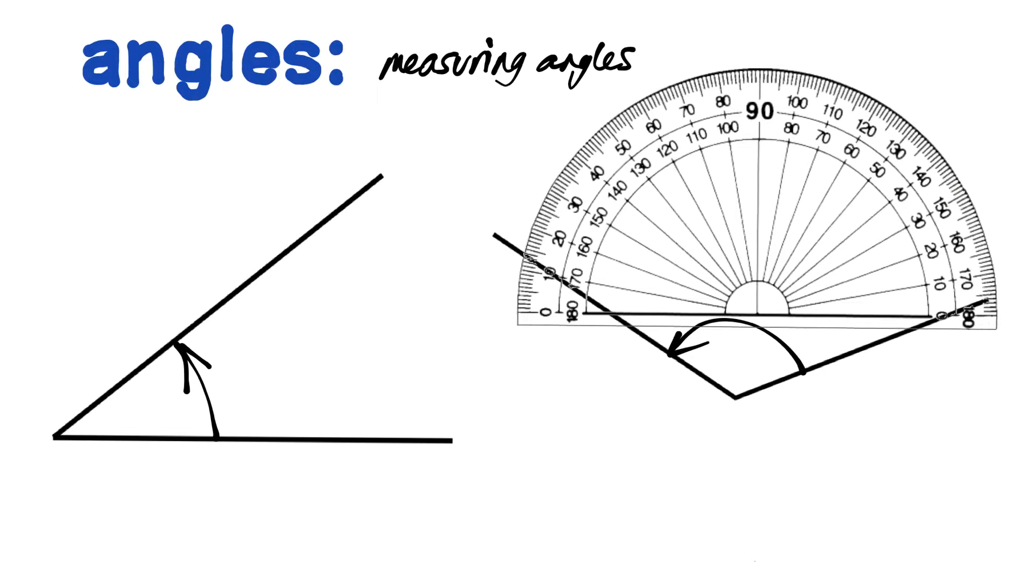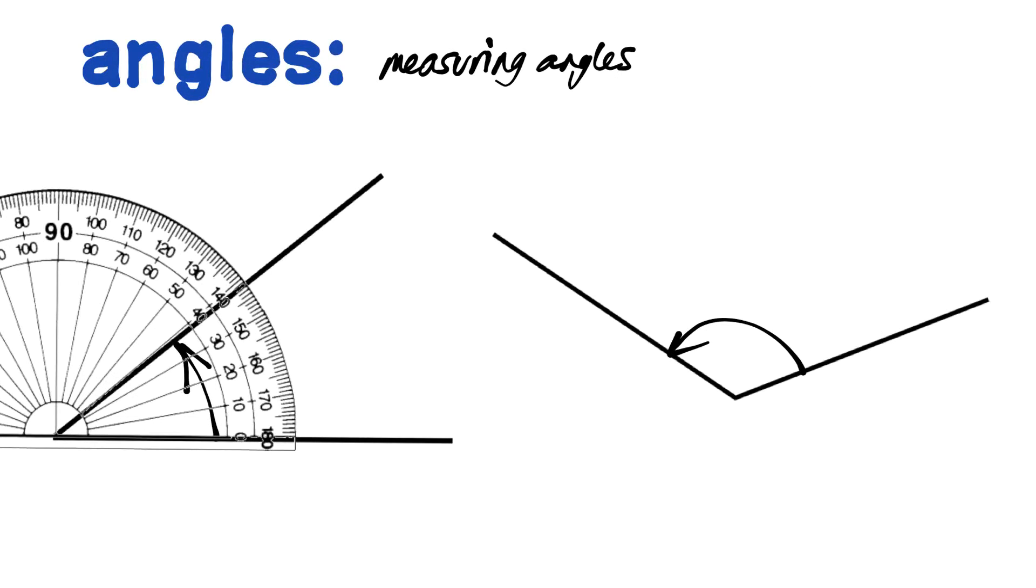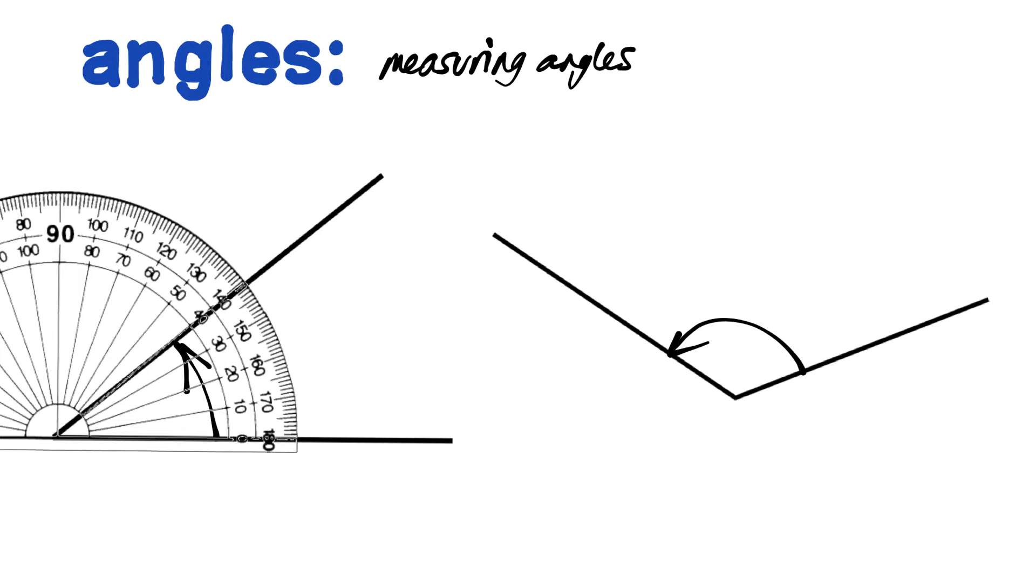When it comes to measuring angles, we use a protractor. And we move the crosshair of the protractor to be on the vertex of the angle. Beautiful. Crosshair onto the vertex, and then we can measure the angle here. We can see it's 10, 20, 30. It's about 38 degrees.